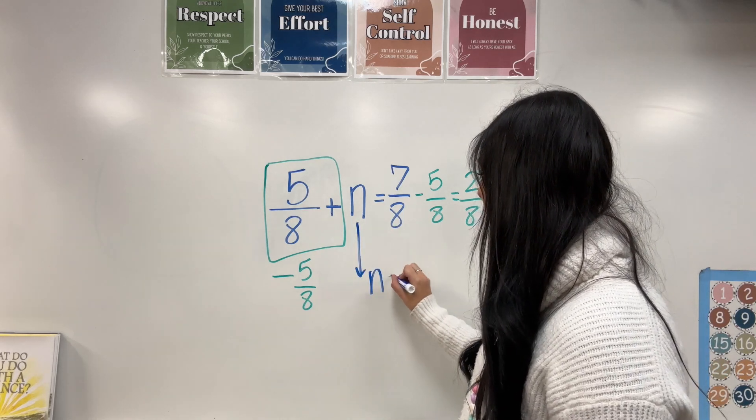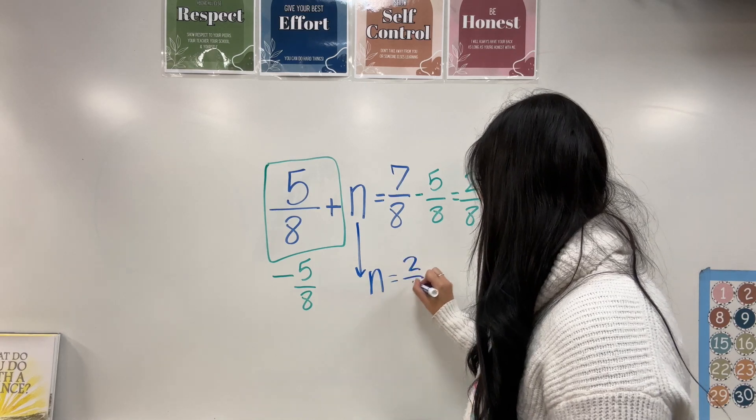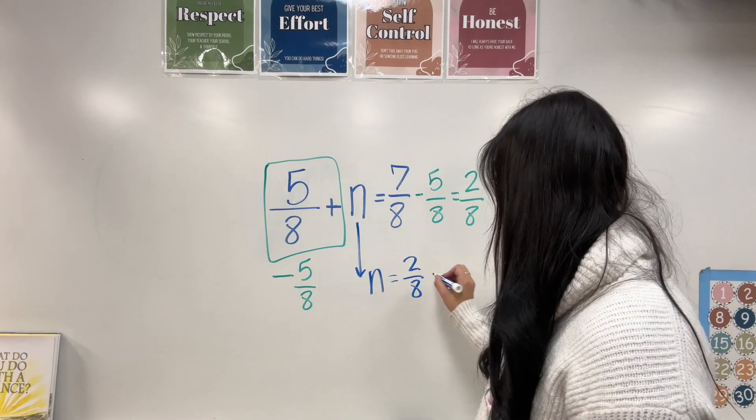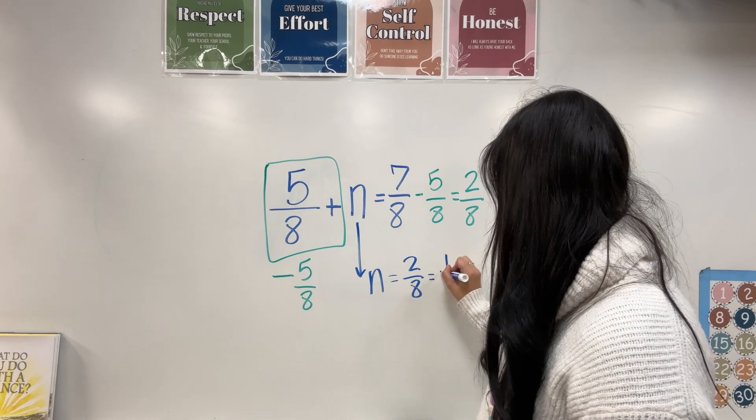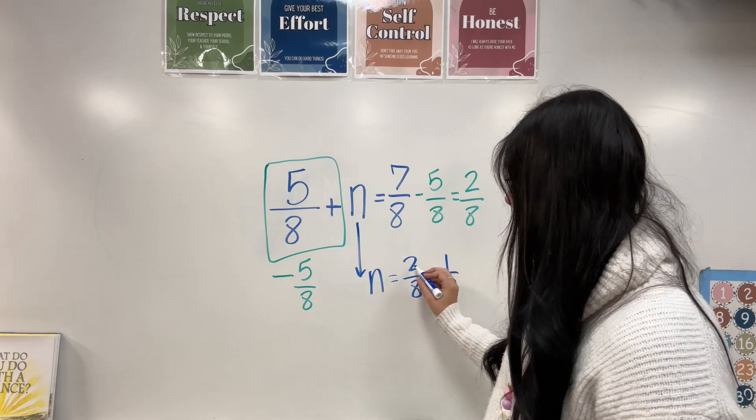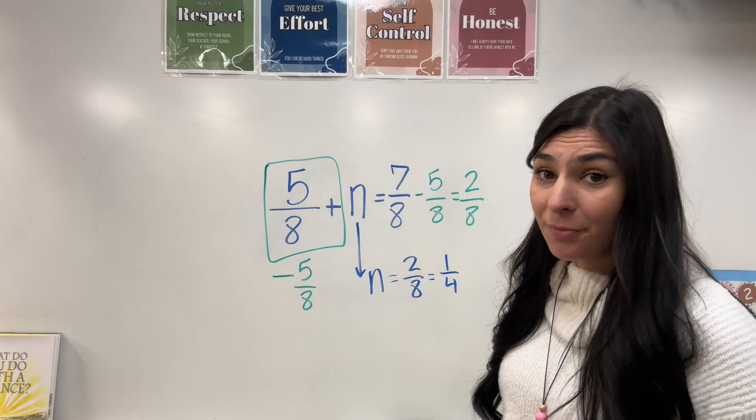So I have two eighths, which means I got n by itself. So n equals two eighths. And from here, I can simplify that two eighths can turn into one fourth because they're both divisible by two. And that's your answer.